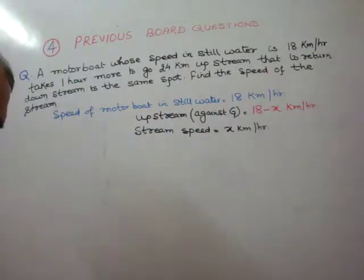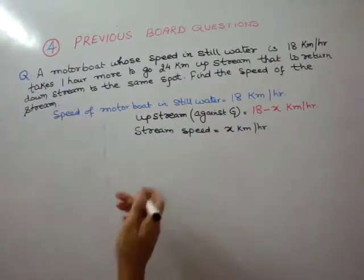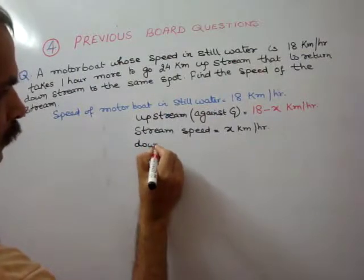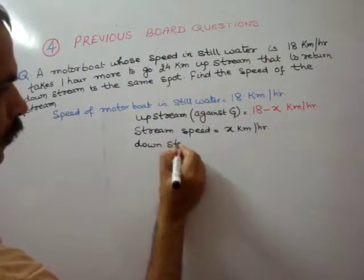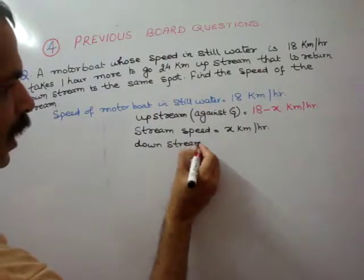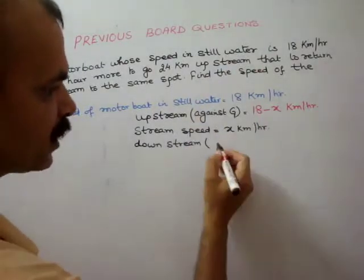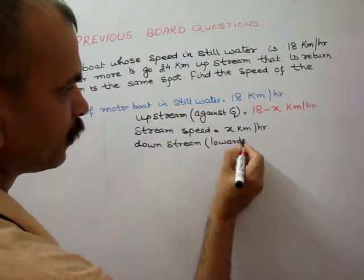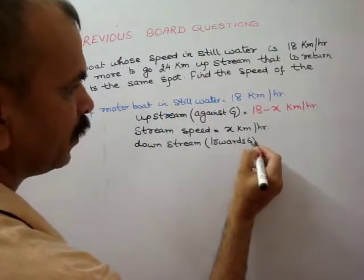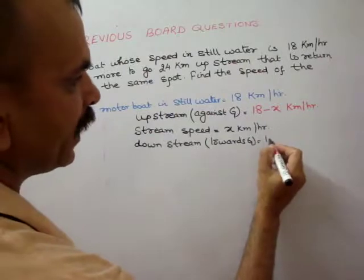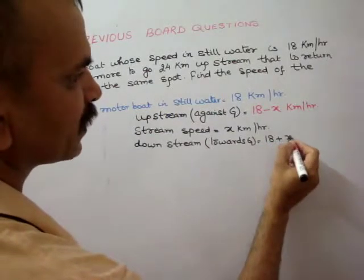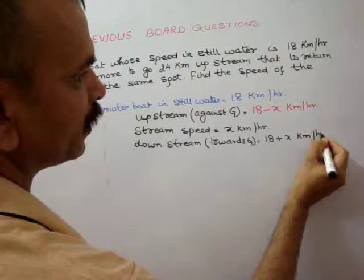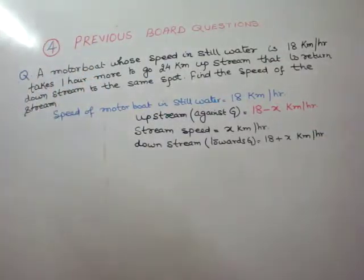Now when we go downstream, in downstream it is towards gravity. So our speed will be 18 plus x kilometers per hour. This will be our downstream speed.